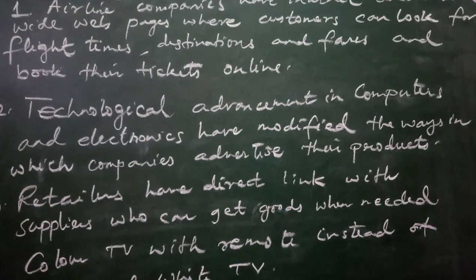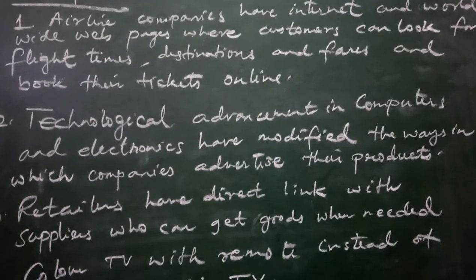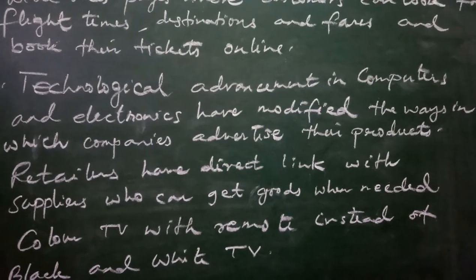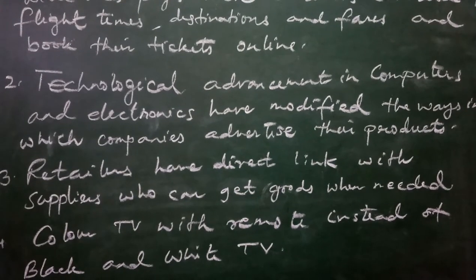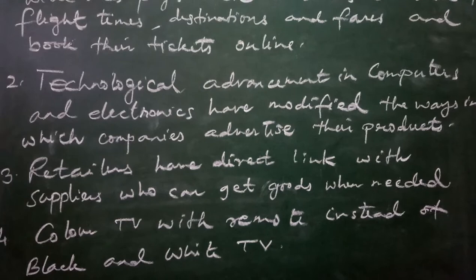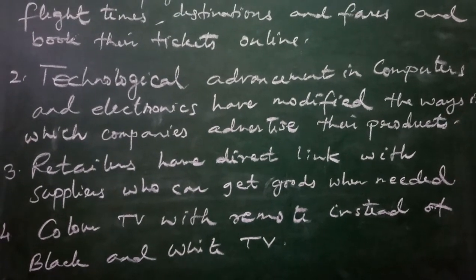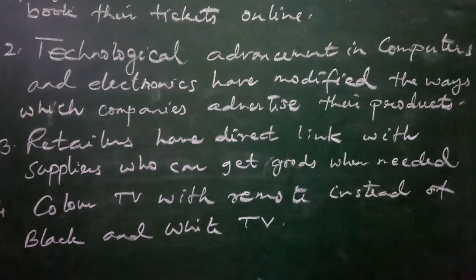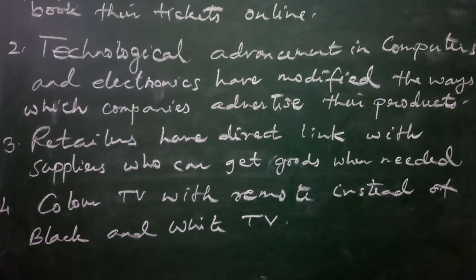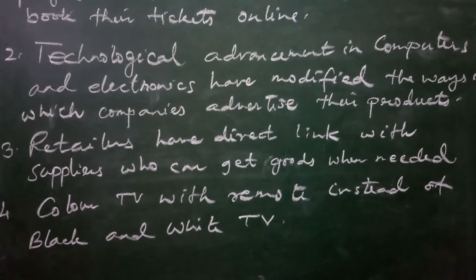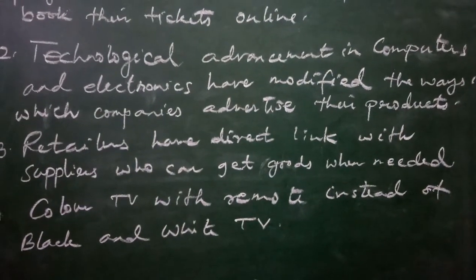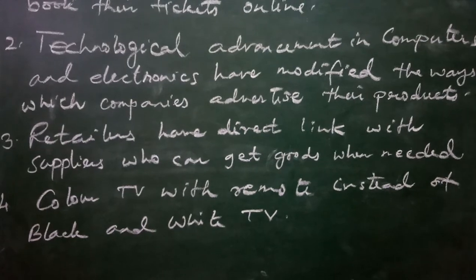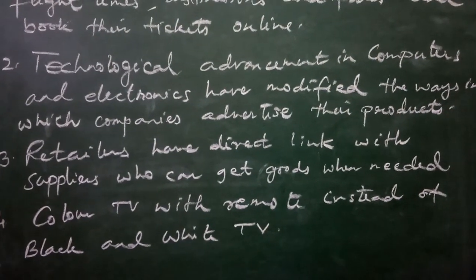Technological advancement in computers and electronics has modified the ways in which companies advertise their products. Advertising methods have changed because of technology. Retailers have direct links with suppliers and can get goods when needed through internet or direct communication. Another example is color TV with remote control replacing black and white TV, and further advancement bringing LCDs and LEDs. So technology is having a greater impact on business.